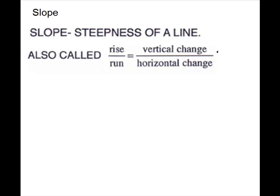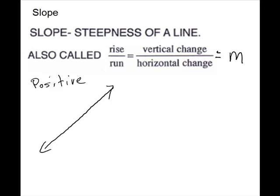We use the letter M to represent slope. We are going to first look at our general cases of slope. We have four cases. The first one is a positive slope — our line will go up to the right, going up higher as it goes across. This is a positive slope. Our next case is a negative slope, which will go down as it goes toward the right. And we always talk about toward the right.